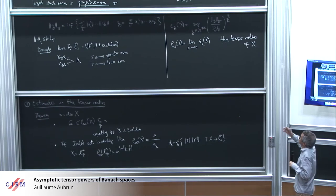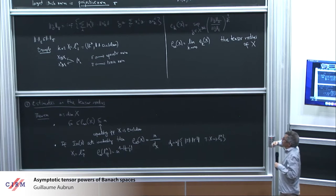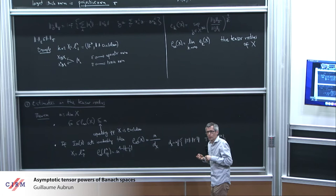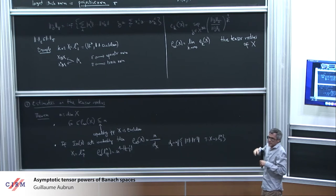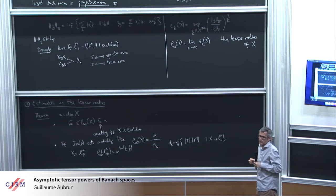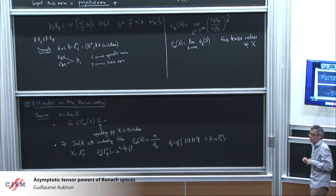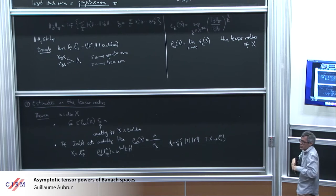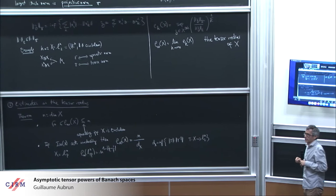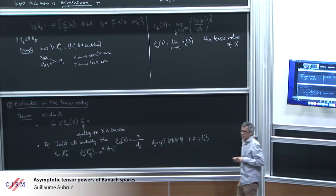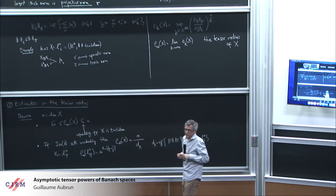If you just know a priori that the norm on your tensor power is reasonable — in the sense that you know the value on rank-one elements — this is the error you may make in estimation. It's the rate at which the error grows asymptotically with the number of tensor powers. There is always a huge discrepancy, and how large it is, is quantified by this parameter.